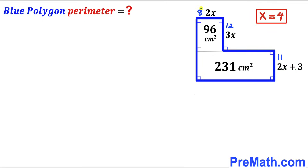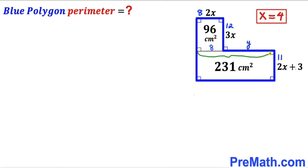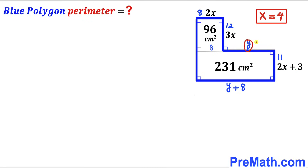Now our task is to calculate the remaining unknown side length, which I'll label as y. We know this horizontal segment equals 8, so the full side length on that edge is y plus 8. By symmetry, the opposite side is also y plus 8. Now we need to find the value of y.